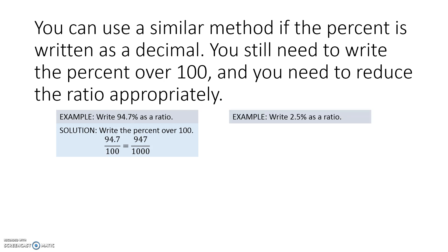Let's write 2.5% as a ratio. Again, we put the 2.5 over 100, and we have to move both decimals one place to the right, and we get 25 over 1000. But that can be reduced, so we reduce it to 1 to 40.